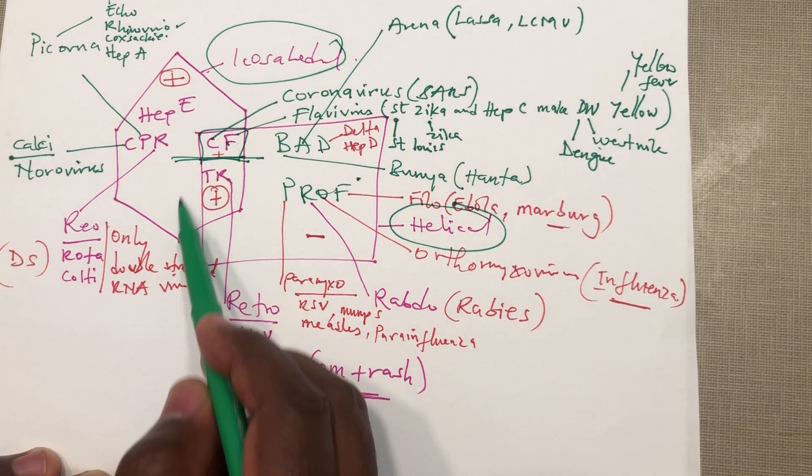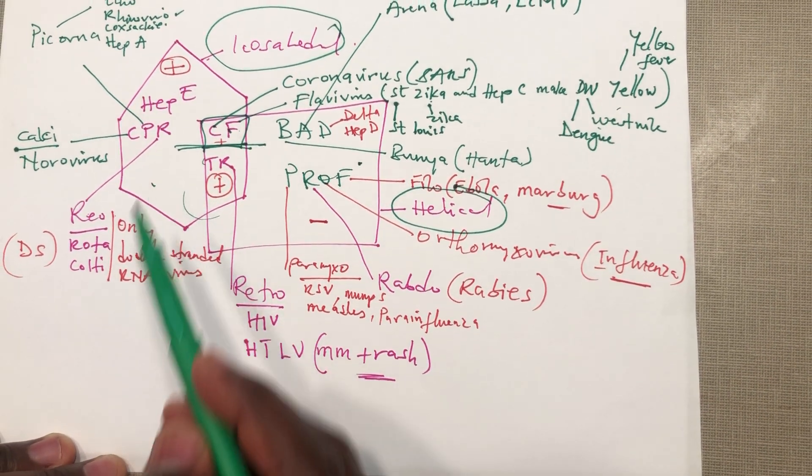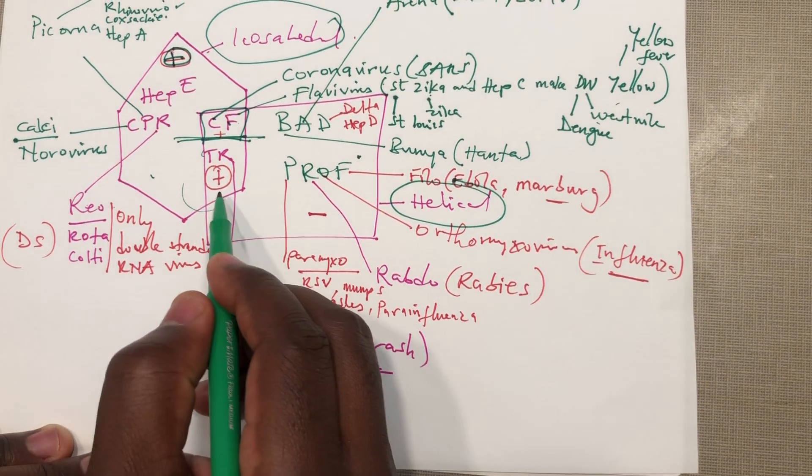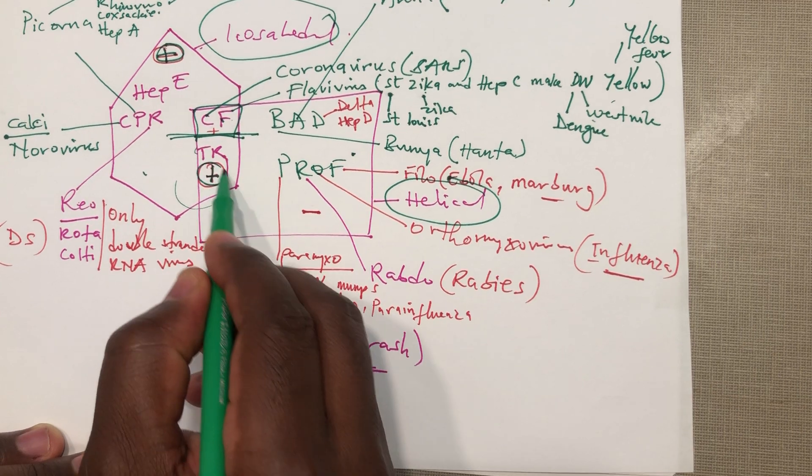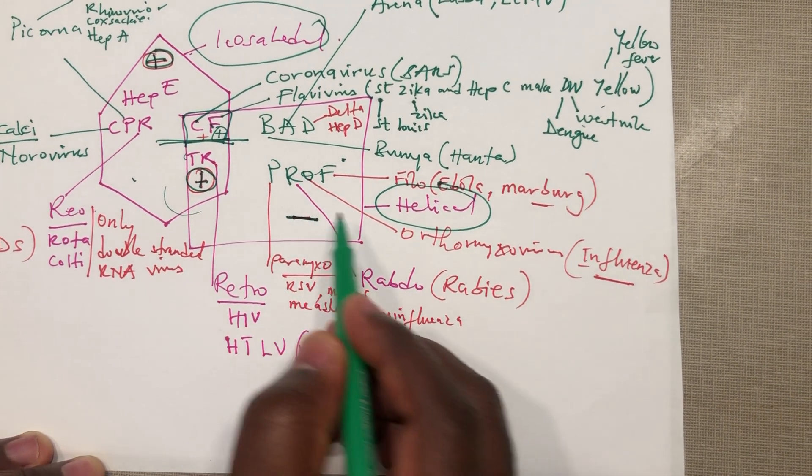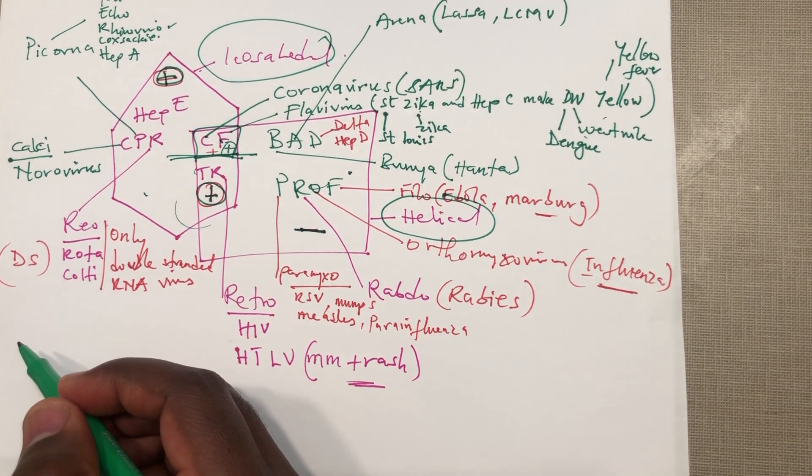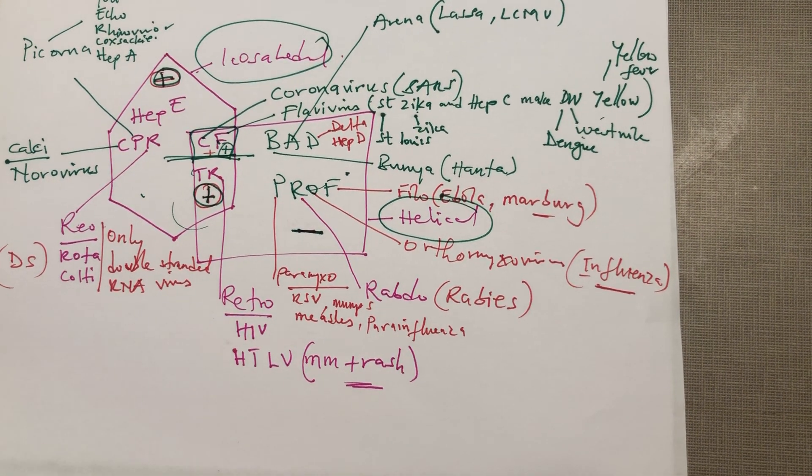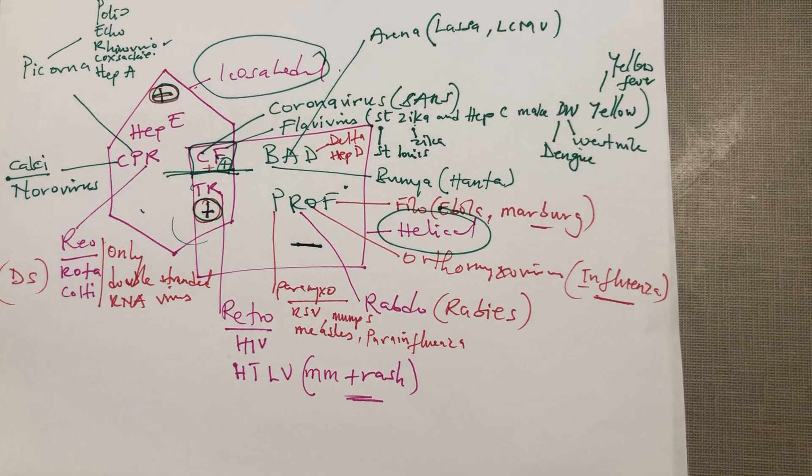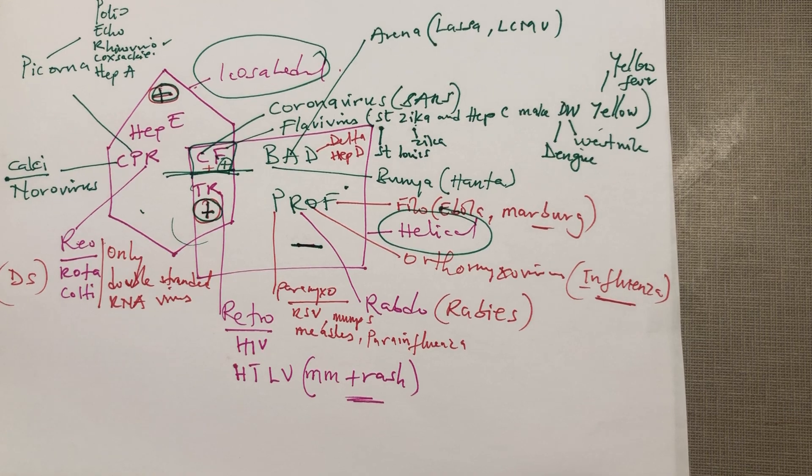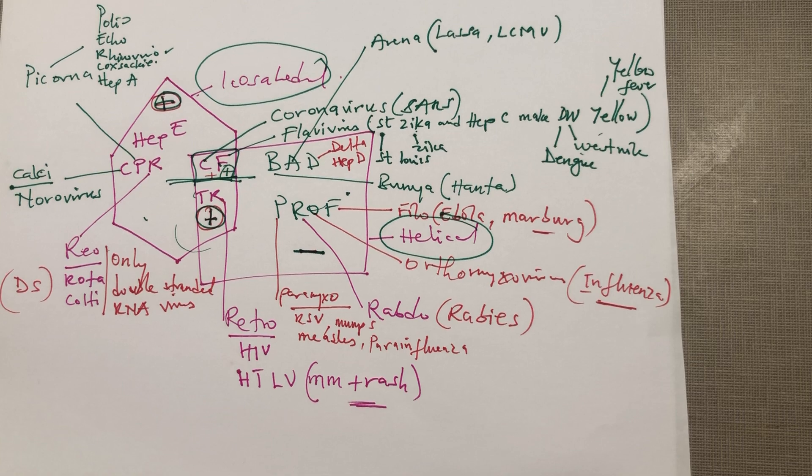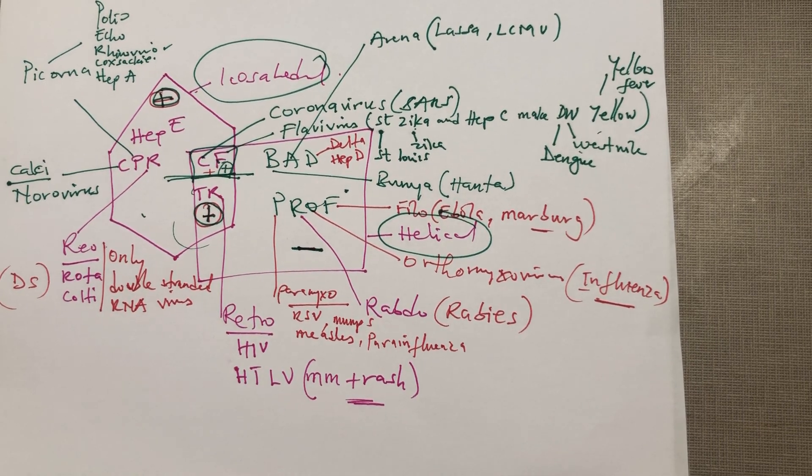We have the positive sense here, also positive sense here too, and all these are negative sense. Positive sense means that the viruses can directly be translated into proteins when they infect a cell. Negative sense means that their RNA should be converted into a positive sense before it can be made into a protein.